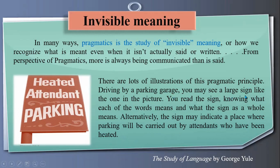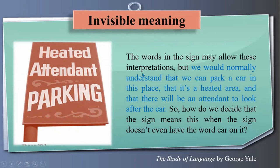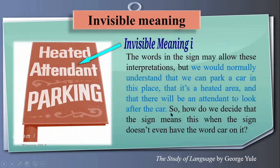Driving by a parking garage, you may see a large sign like the one in the picture. You read the sign knowing what each word means and what the sign as a whole means. Alternatively, the sign may indicate a place where parking will be carried out by attendants who have been heated. So there could be different interpretations of this sign with different meanings — those meanings could be invisible. The words and the sign may allow these interpretations, but we would normally understand that we can park a car there, that it is a heated area, and that there will be an attendant to look after the car. But how do we decide the sign means this when the sign doesn't even have the word 'car' on it?